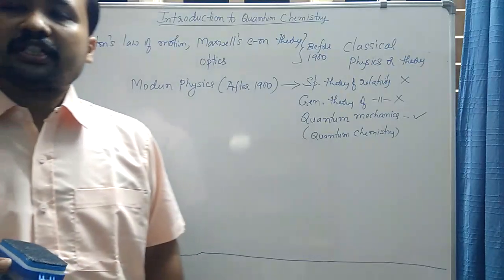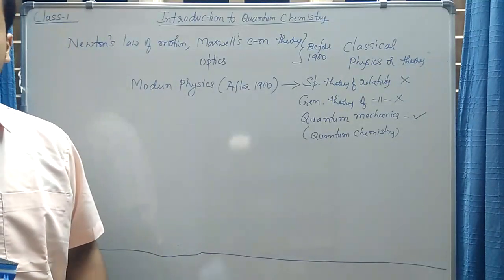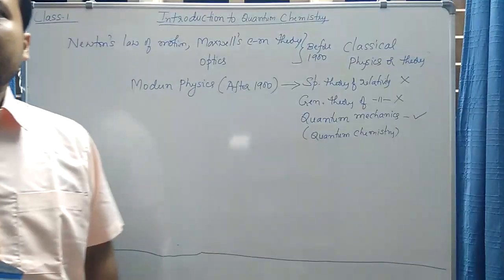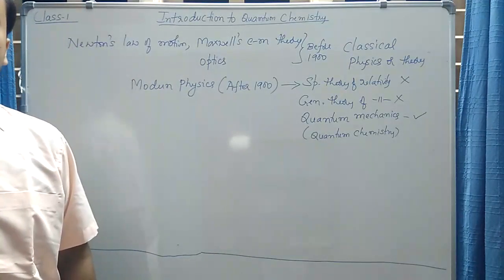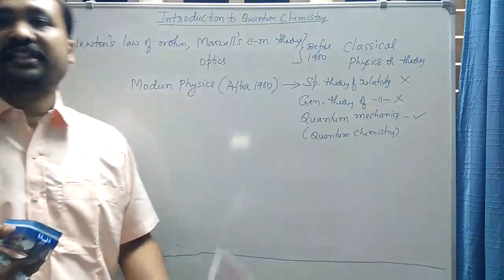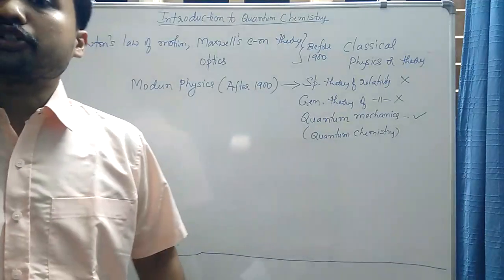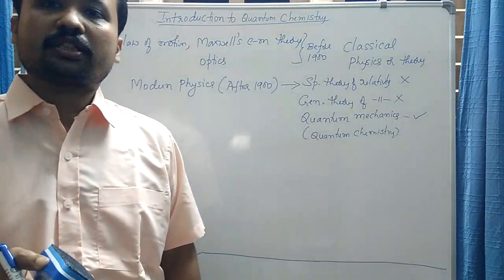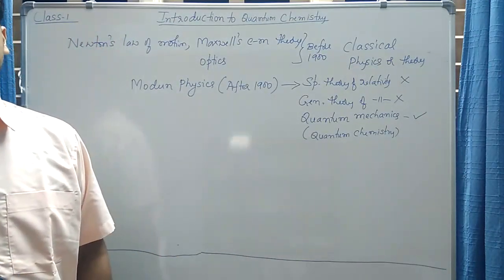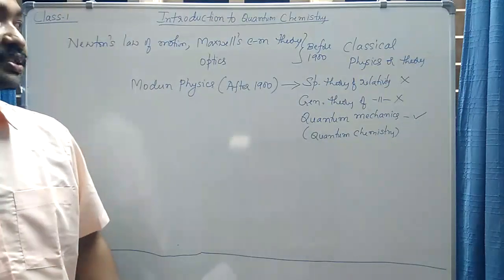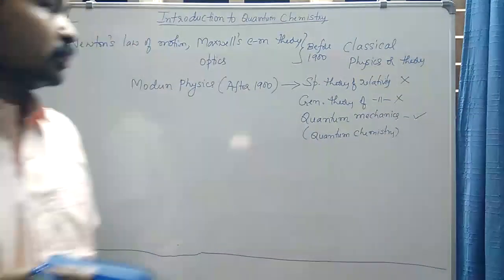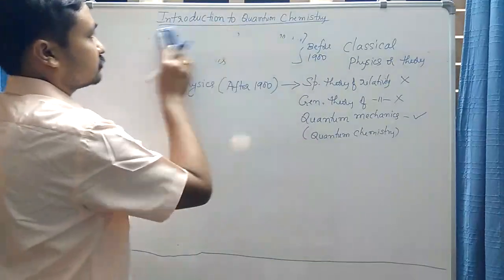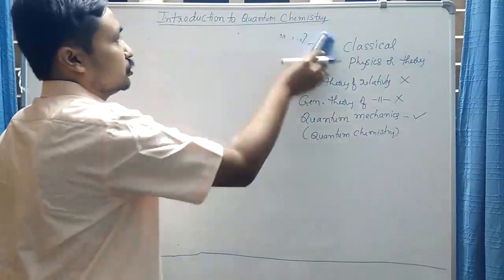Remember, it is not the complete failure of classical theory. Classical theories are correct in their own way even today, but they are not complete. They are applicable only for certain problems or systems — they are not universal. Classical theory is not completely wrong, but it is also not completely correct or universal. That is why we require a new theory called quantum theory.